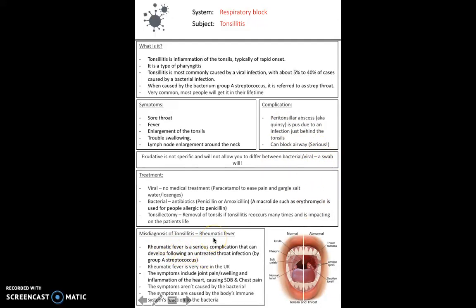Sometimes tonsillitis can be misdiagnosed. So rheumatic fever is a serious complication that can develop following an untreated throat infection. So it's linked to bacteria, group A streptococcus again. It's very rare, however, in the UK. And it'll usually cause joint pain or swelling and inflammation of the heart, shortness of breath, chest pain. One thing that's always important to remember, especially with things like the common cold or tonsillitis, the symptoms aren't caused by the bacteria. The symptoms are caused by the body's immune system's reaction to the bacteria itself.